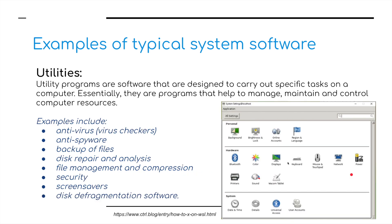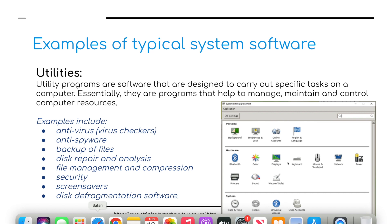Utility software includes everything from antivirus and anti-spyware to backing up files, defragging our computers, screen saver security, and lots of other things. For example, if you are running iOS and click on the system preferences, you can access lots of this functionality.